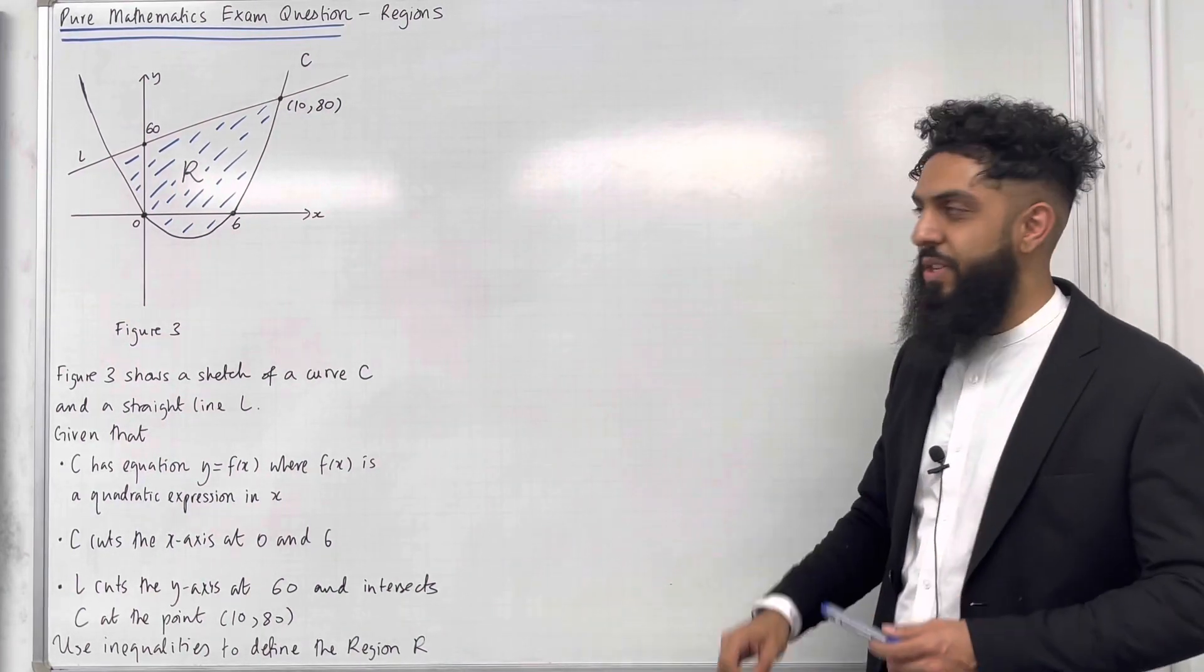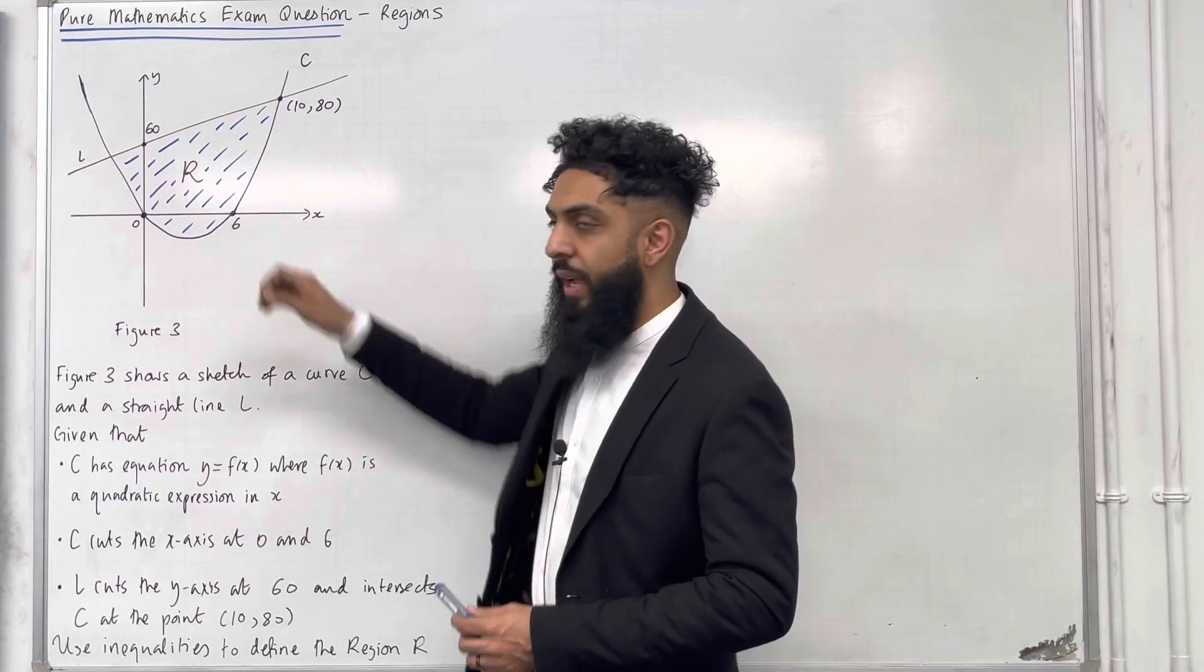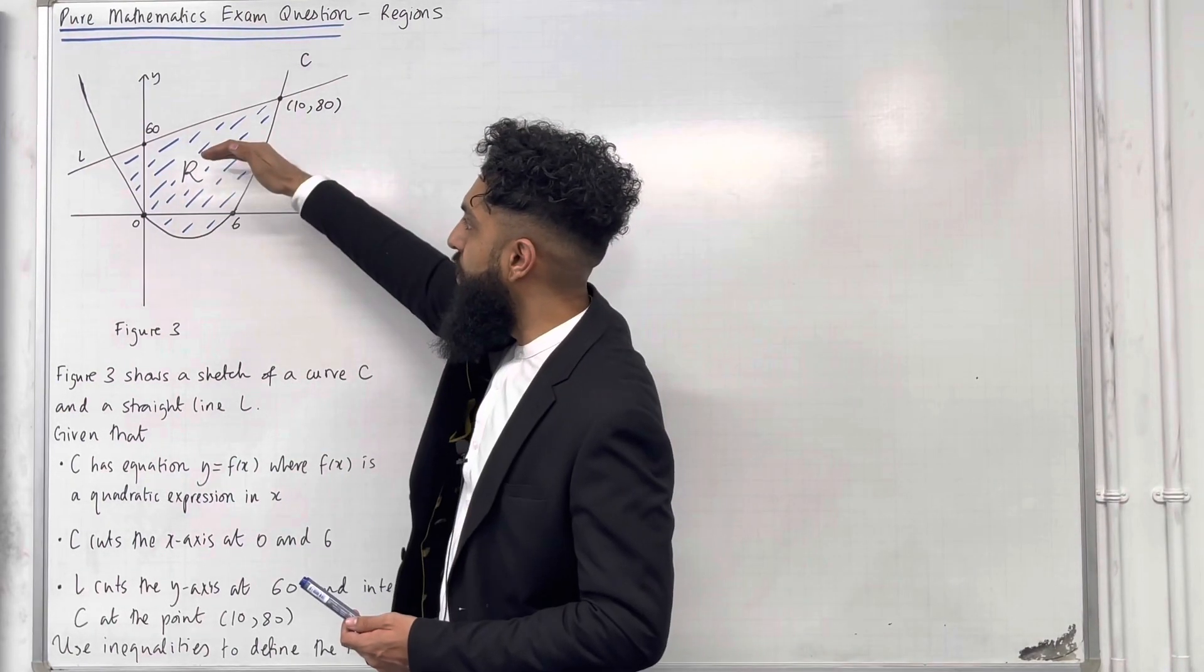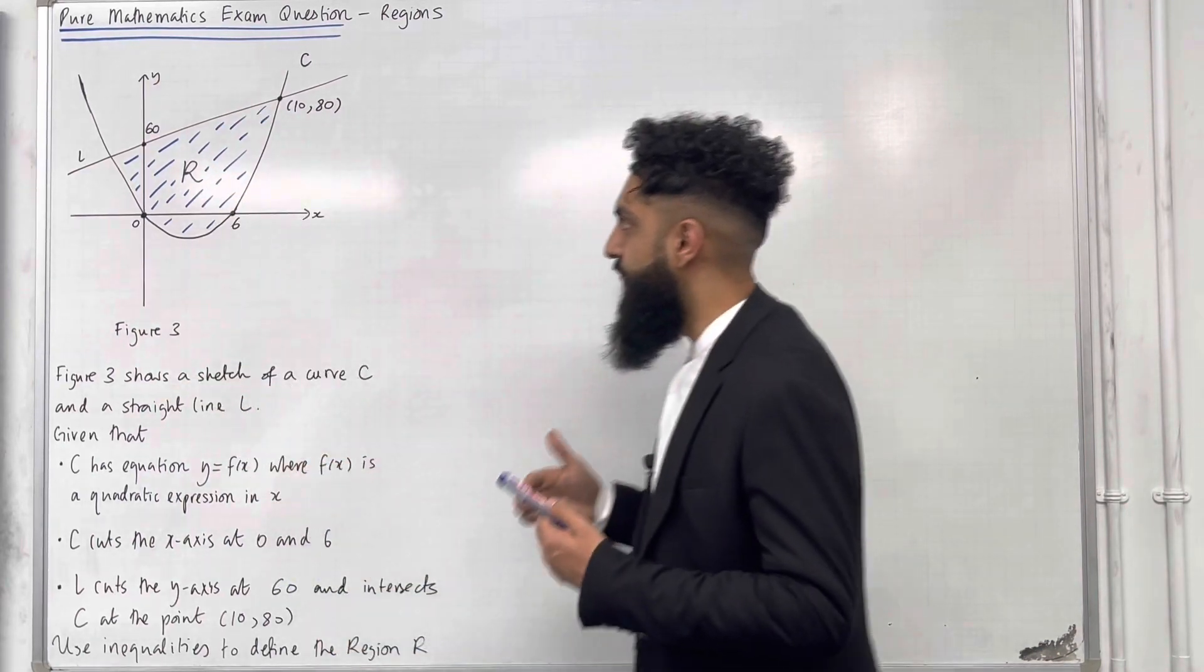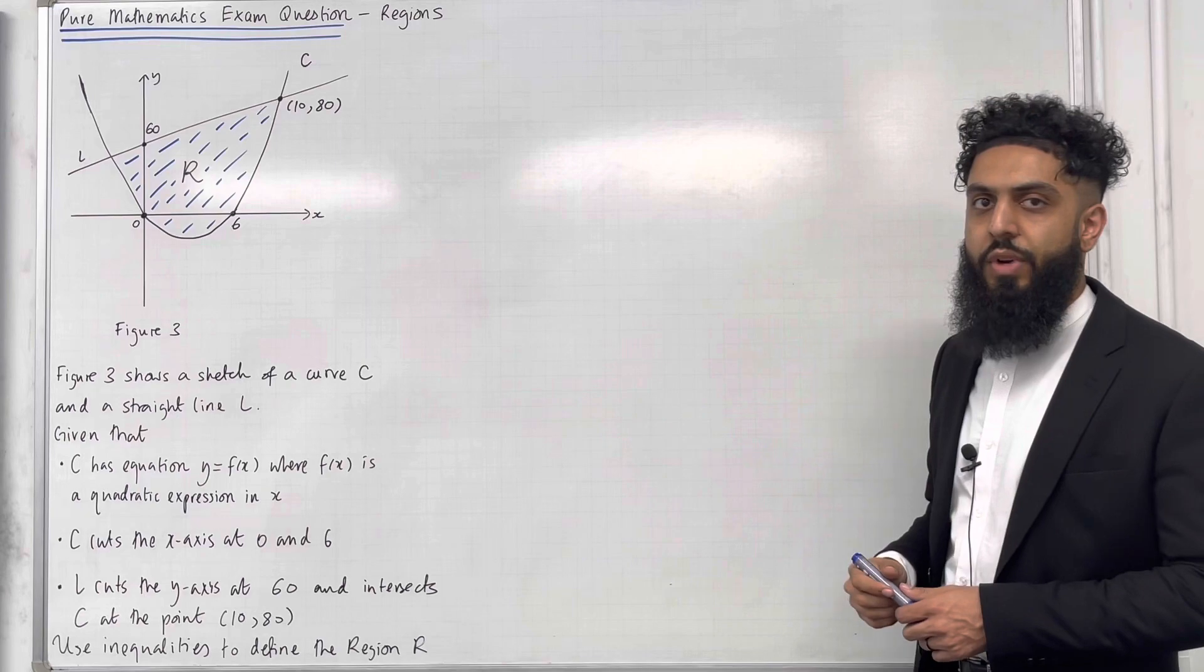Ladies and gents, the region R is shown shaded in blue. It satisfies the condition that we are above or equal to the quadratic and below or equal to the straight line. I'm going to start by finding the equation of the straight line L.